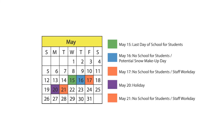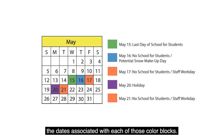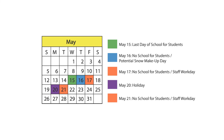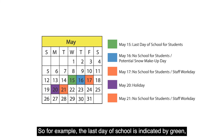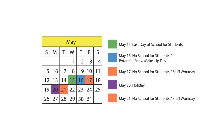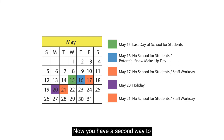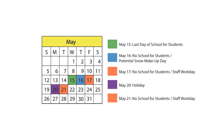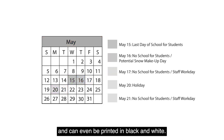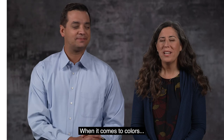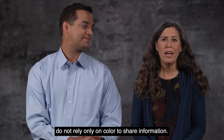You can fix the problem this way: create a calendar that lists the dates associated with each of those color blocks. For example, the last day of school is indicated by green, so next to the green color block type 'May 15th — the last day of school.' Now you have a second way to communicate the same information. It works for everyone and can even be printed in black and white.